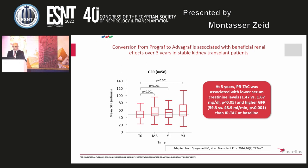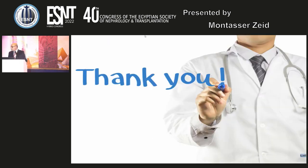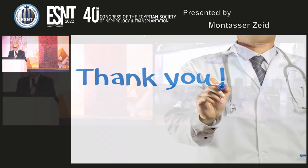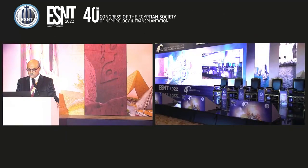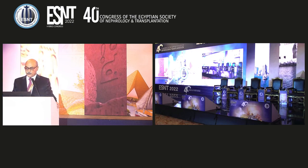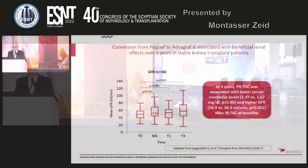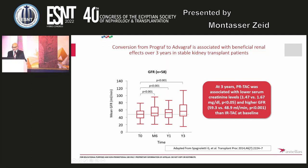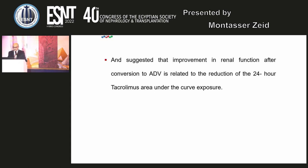Another study found that conversion from Prograf to Advagraf is associated with beneficial renal effects over three years in stable kidney transplant patients. Prolonged-release tacrolimus was associated with lower serum creatinine and higher GFR than immediate-release tacrolimus at baseline, and improvement in renal function after conversion to Advagraf is related to reduction in the 24-hour tacrolimus area under the curve exposure.